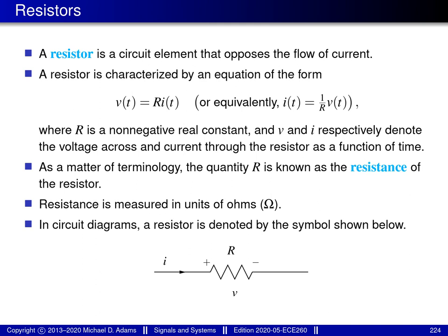The first type of circuit element is a resistor. A resistor is a circuit element that opposes the flow of current, characterized by the equation V = R·I, where R is a non-negative real constant and V and I are respectively the voltage across and current through the resistor as a function of time. The quantity R is known as the resistance; the larger the resistance, the more the resistor opposes current flow. Resistance is measured in the unit of the ohm, abbreviated as the Greek capital letter omega.